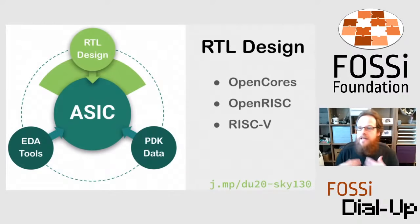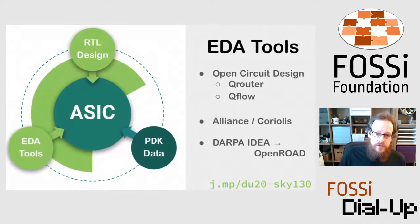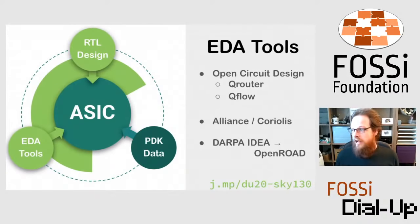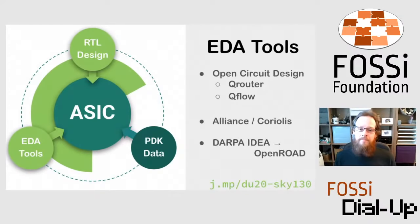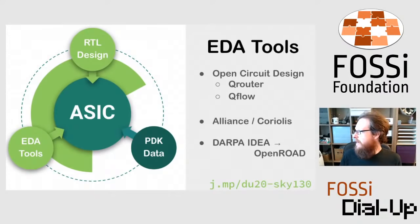For an open source ASIC, you need all three parts to be open. RTL design has a long history of being open — the OpenCores project has been around for a long time, there was the open RISC project which was basically RISC-V before RISC-V was cool, and now there's been a massive explosion in open source RTL design thanks to the RISC-V architecture. IBM has even started releasing open source RTL for their Power processors. EDA tools also have a fairly long history of being open source — Open Circuit Design by Tim Edwards, the Libre-SOC and Coriolis flow from France, and the new OpenROAD project.